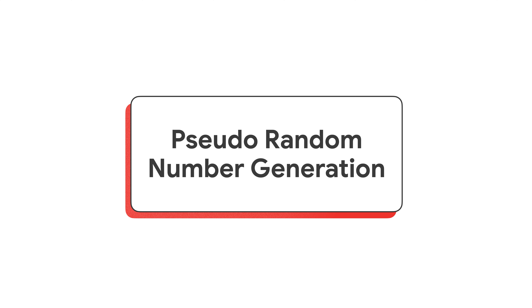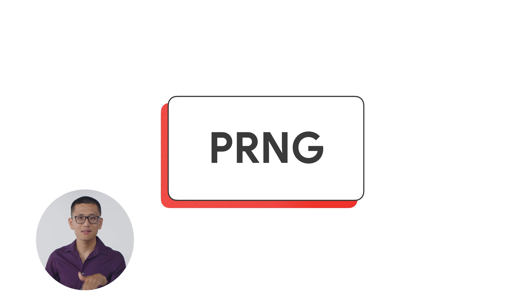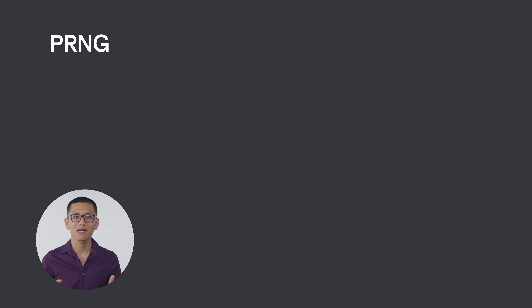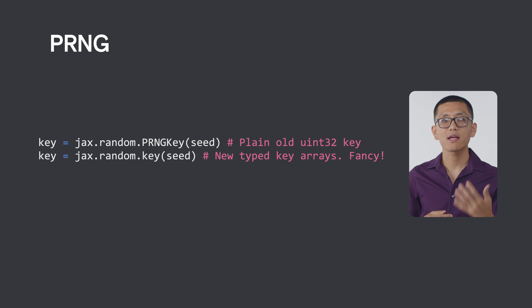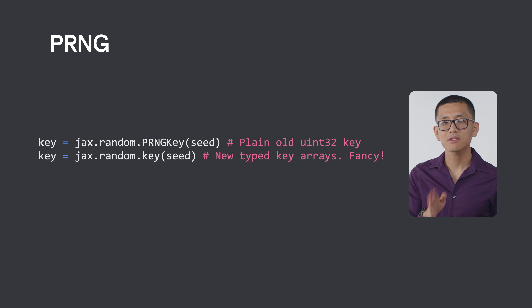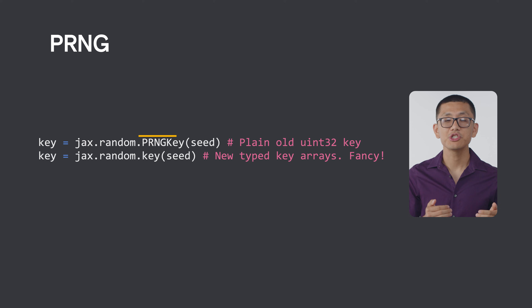Hopefully now you're beginning to see how things are starting to fit together. Let's delve deeper into this idea of explicitly threading state with the topic of pseudo random number generation, or PRNG for short. PRNG is a great example of threading state throughout a JAX program, because instead of setting a random key at the beginning of your program and forgetting about it, JAX functions need you to explicitly tell them what the PRNG situation is using a PRNG key.